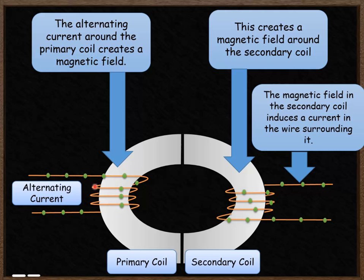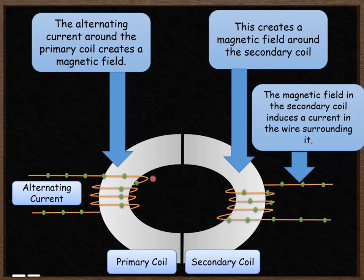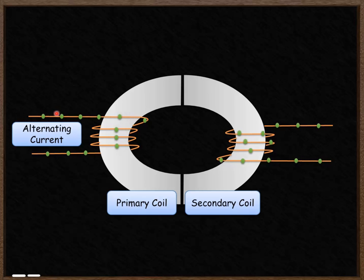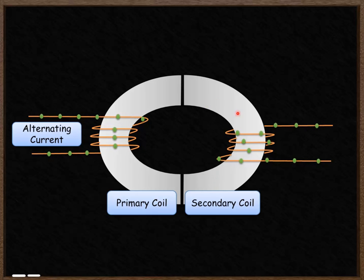This is all created by the current flowing around the primary coil. If this wasn't an alternating current, you wouldn't have a magnetic field which changes, and you wouldn't have a current flowing in the secondary coil. It is important to note that the alternating current that flows around the primary coil never contacts the alternating current flowing in the secondary coil — these wires are not connected. The only reason current flows in the secondary coil is because of the moving magnetic field.